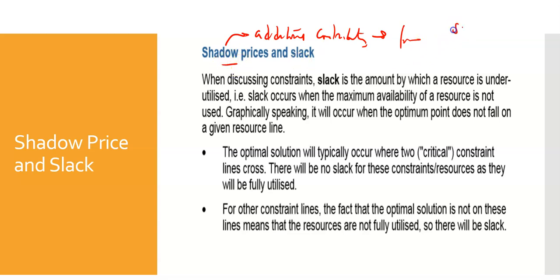Shadow pricing has to do with scarce resources. The argument here is it doesn't really matter - it could be material. The argument is what is the additional contribution we're going to get as a result of having an extra kilogram of scarce resource or an extra hour of scarce resource.